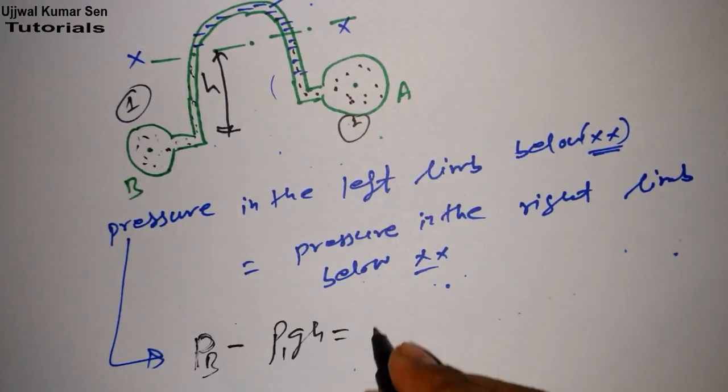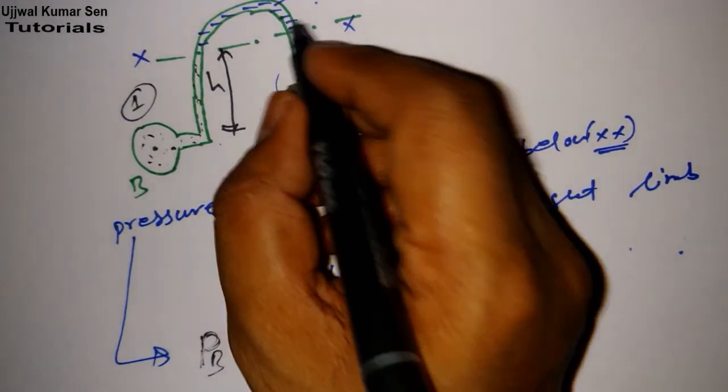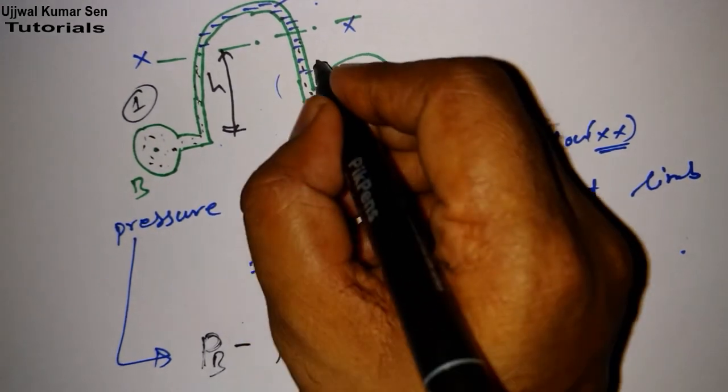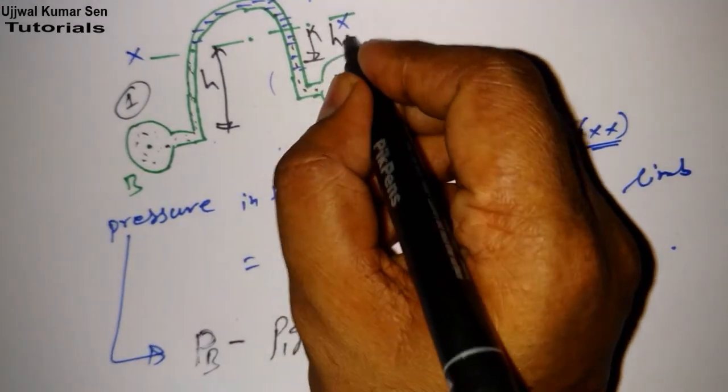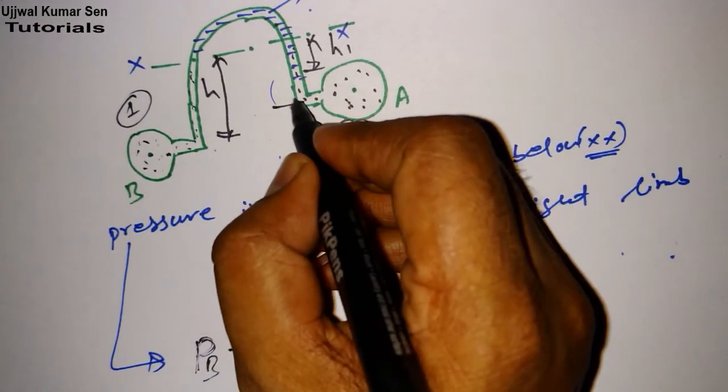From this we can write the equation: this is equal to P_A, pressure at point A, minus because of this light liquid, density of light liquid, g, and height - from here to here is H_1, so g H_1.